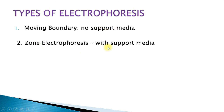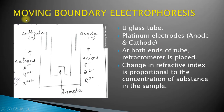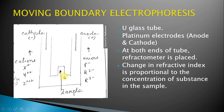Moving boundary electrophoresis has no support media. It uses a U-shaped glass tube with two arms fitted with platinum electrodes — the cathode and the anode — at both ends. A refractometer is placed in the center, and there is a cavity where the sample is loaded. If the sample contains cations, it moves towards the cathode; if it contains anions, it moves towards the anode. The migration causes a change in the refractive index of the solution, which is proportional to the concentration of the substance.